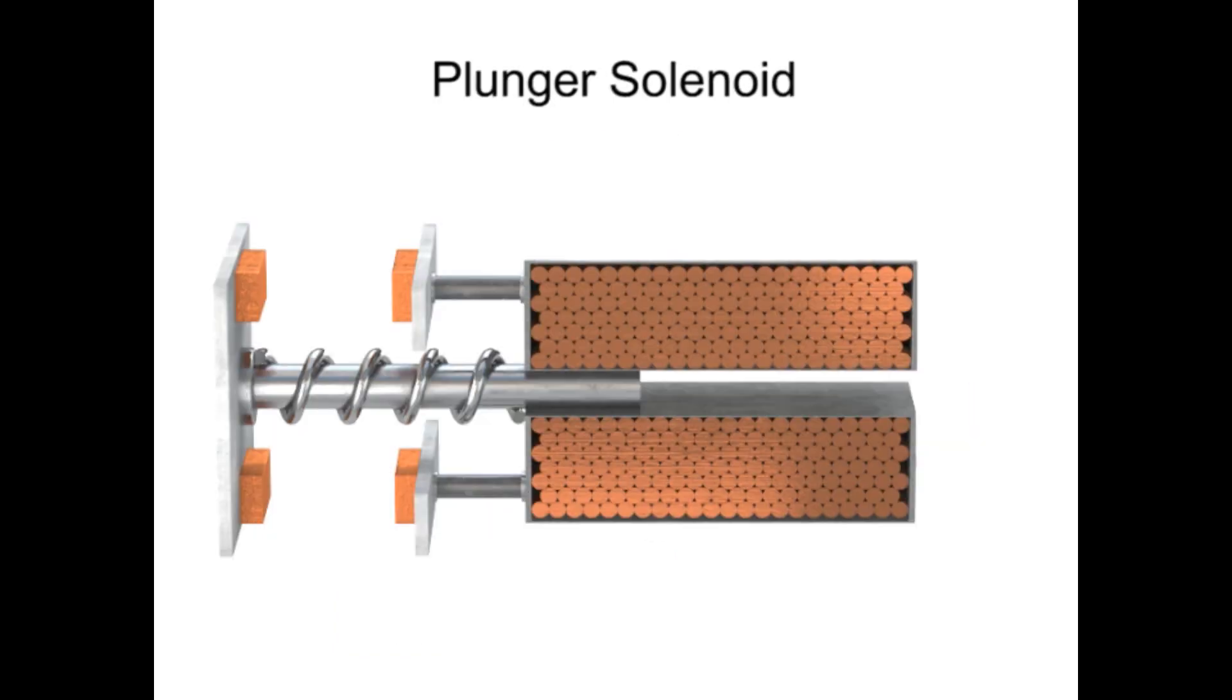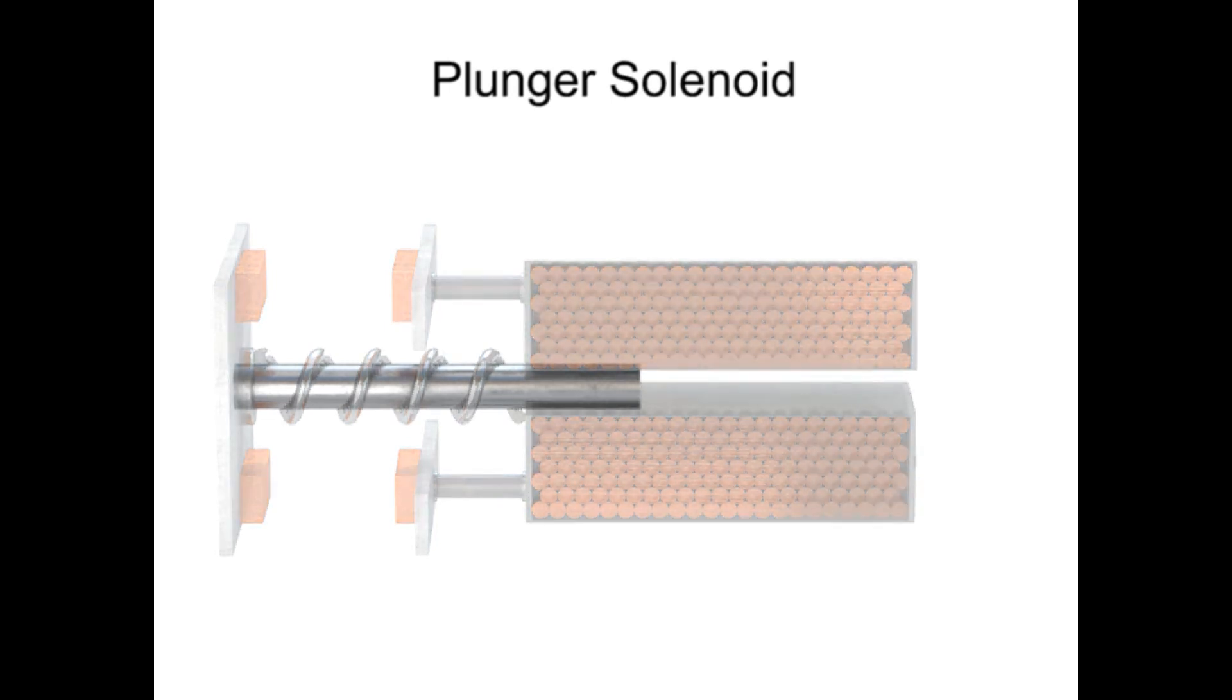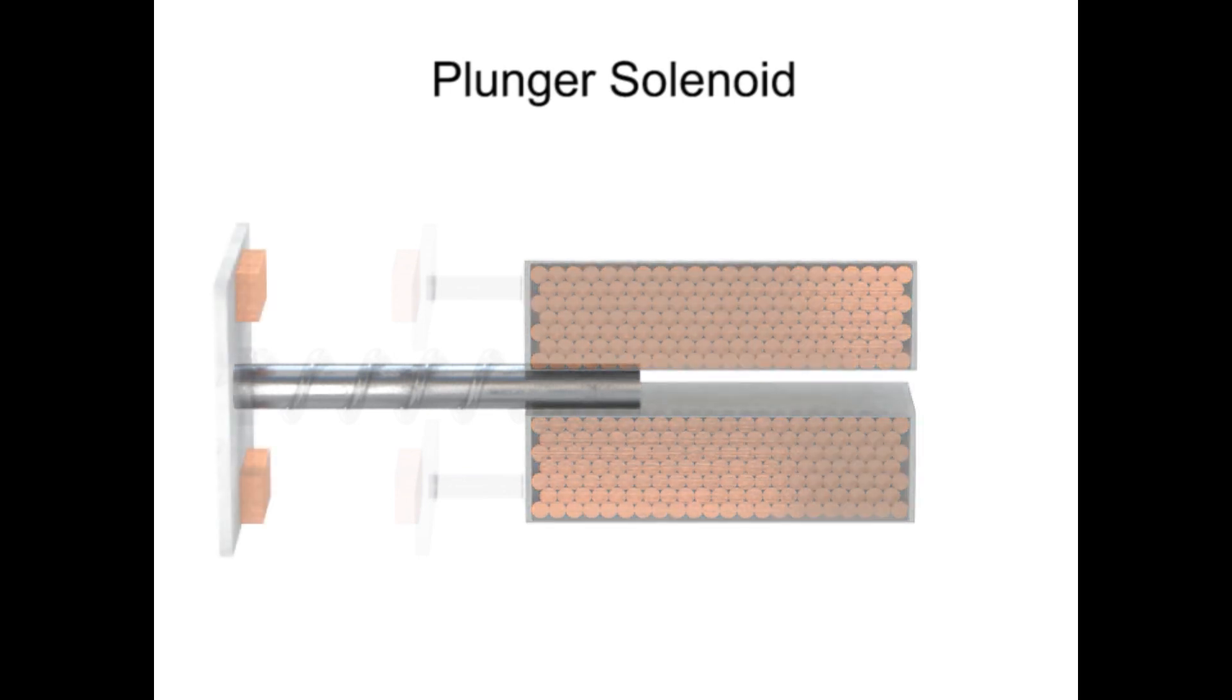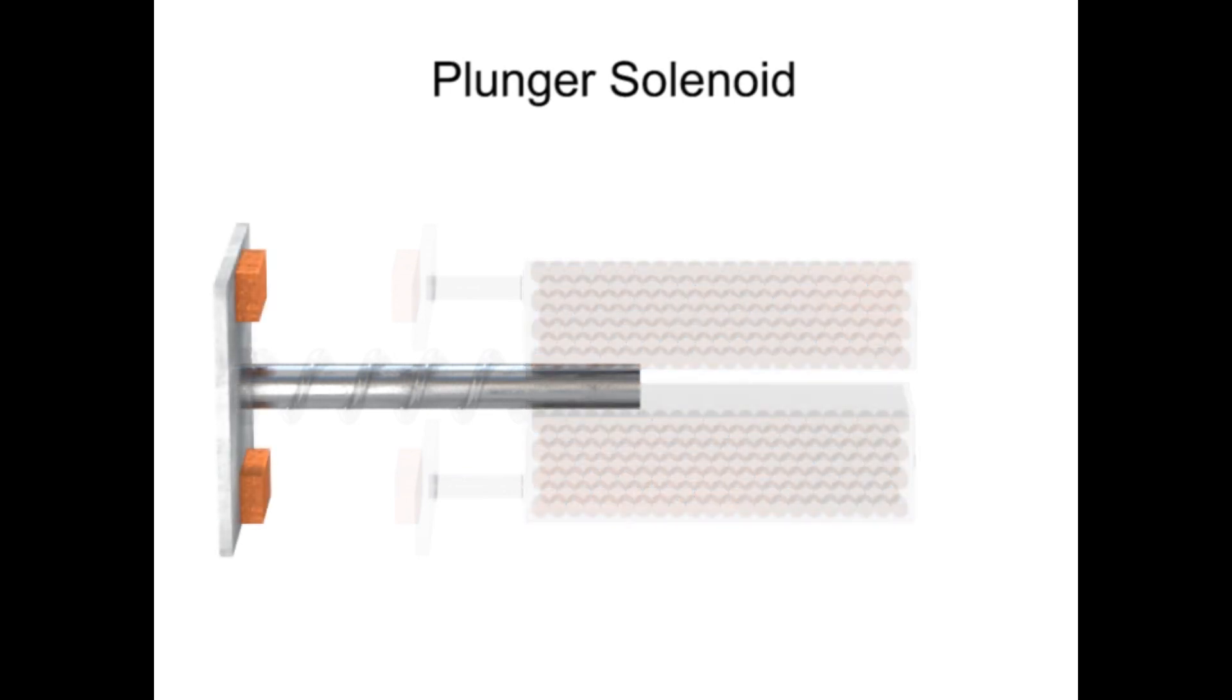A plunger solenoid contains a movable iron rod that is inserted into a coiled cylinder. The rod is connected to a plate with two contacts. With the aid of a spring, the contacts are normally open.